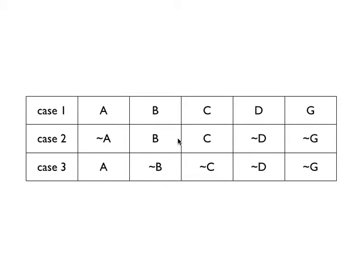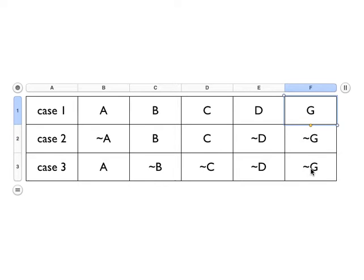Here's how to determine whether one thing is a sufficient condition for another thing. Here we're going to treat G as our target feature, and A, B, C, and D as our candidate features. What we want to know is whether either of A, B, C, and D are sufficient for G.